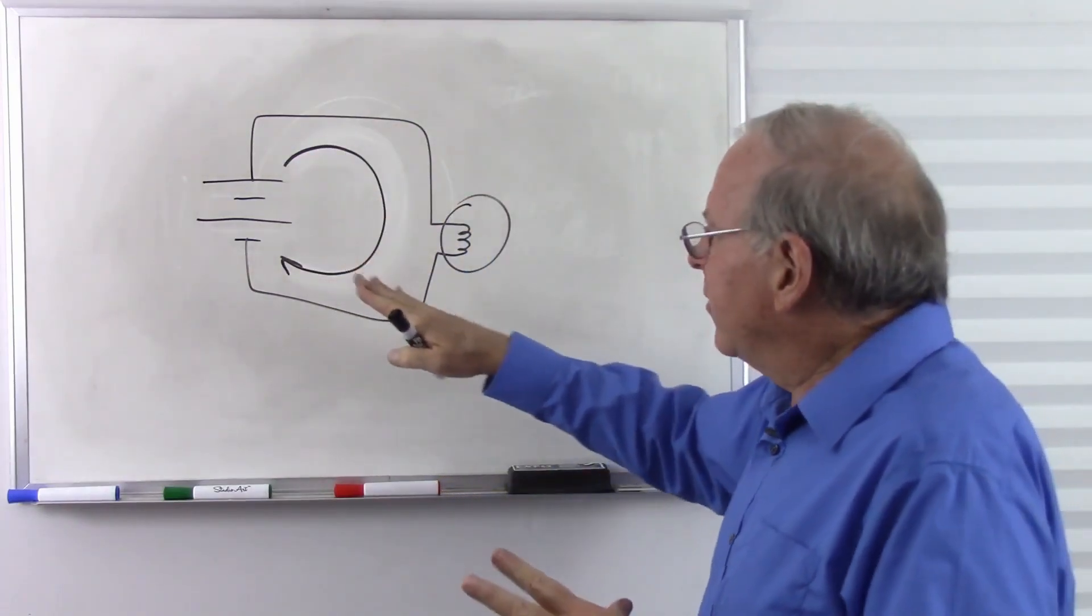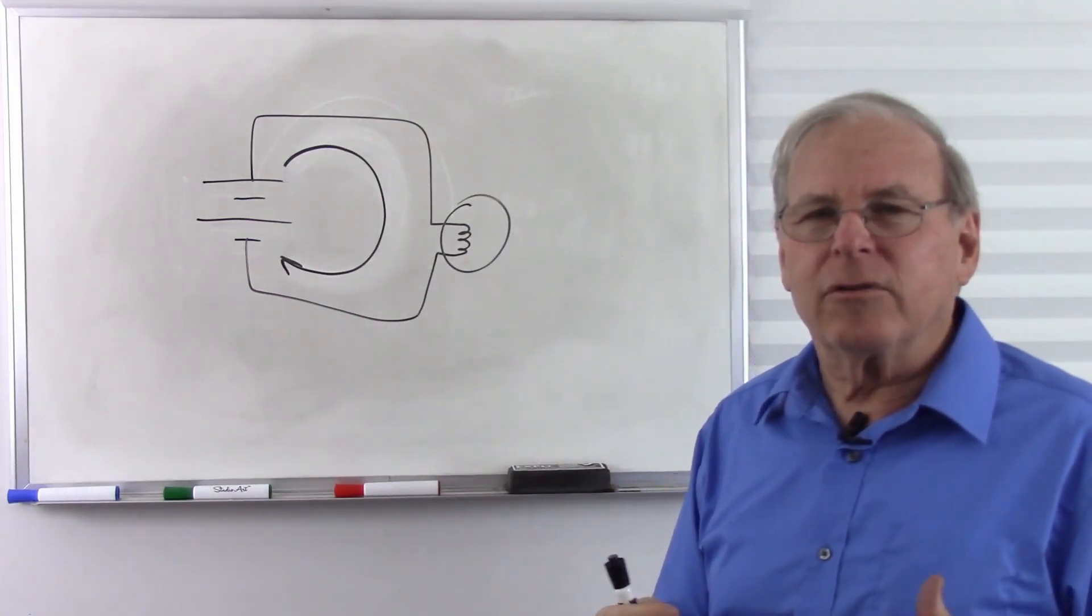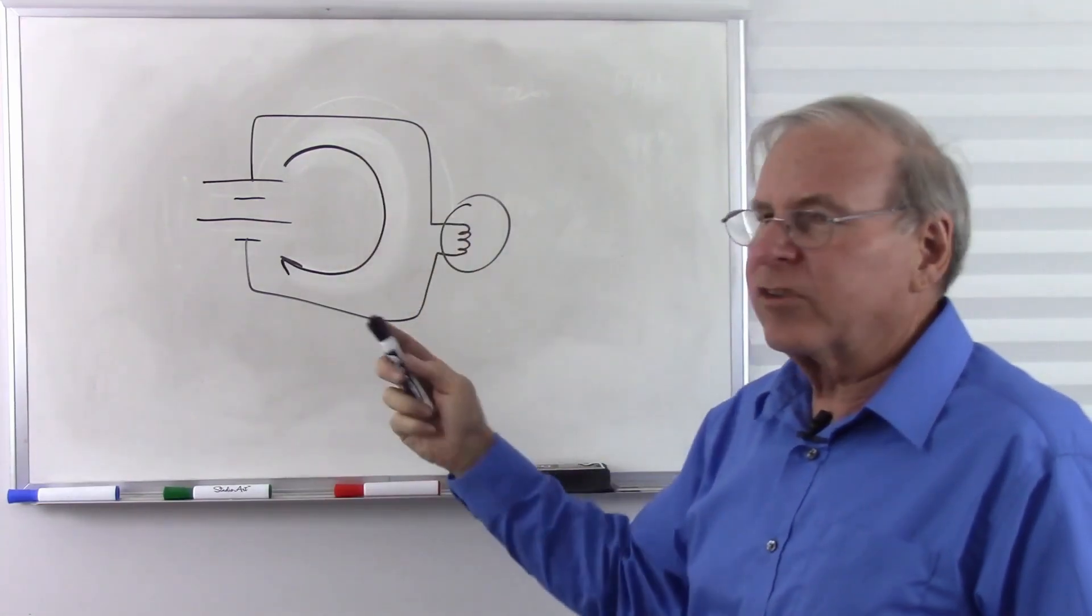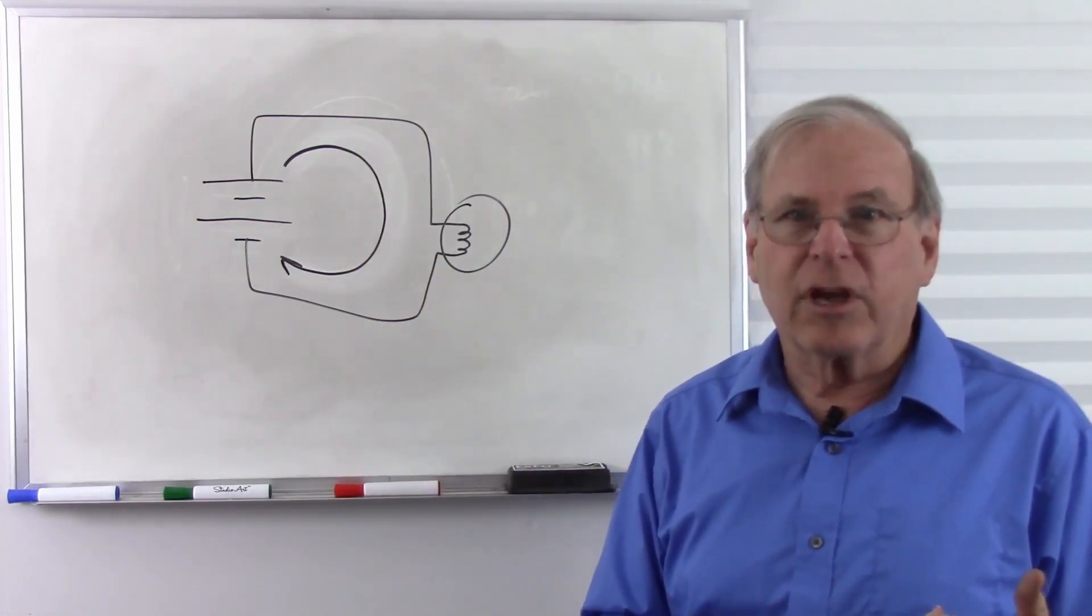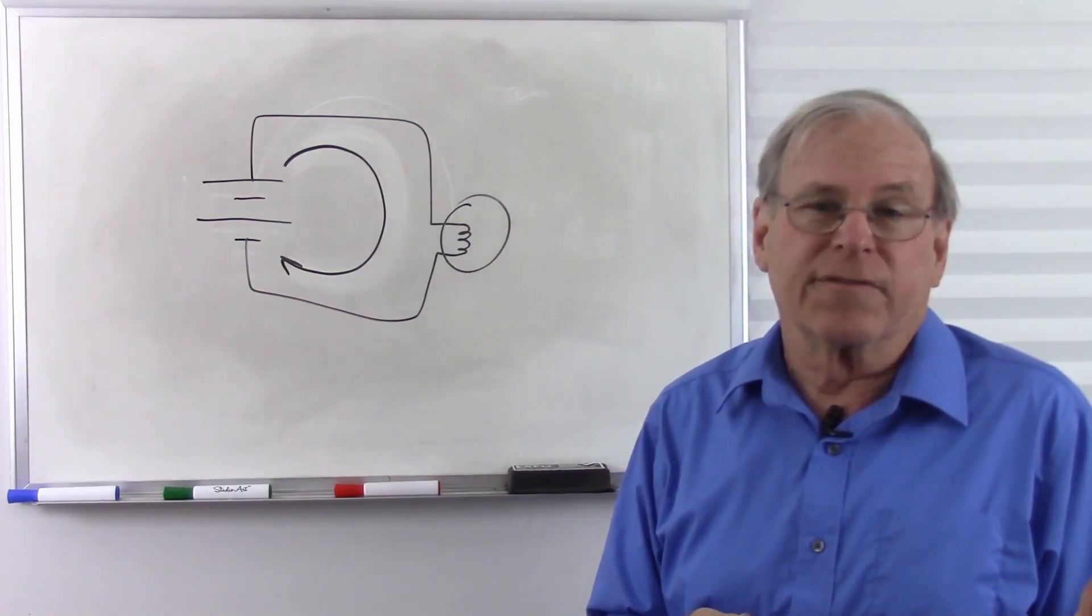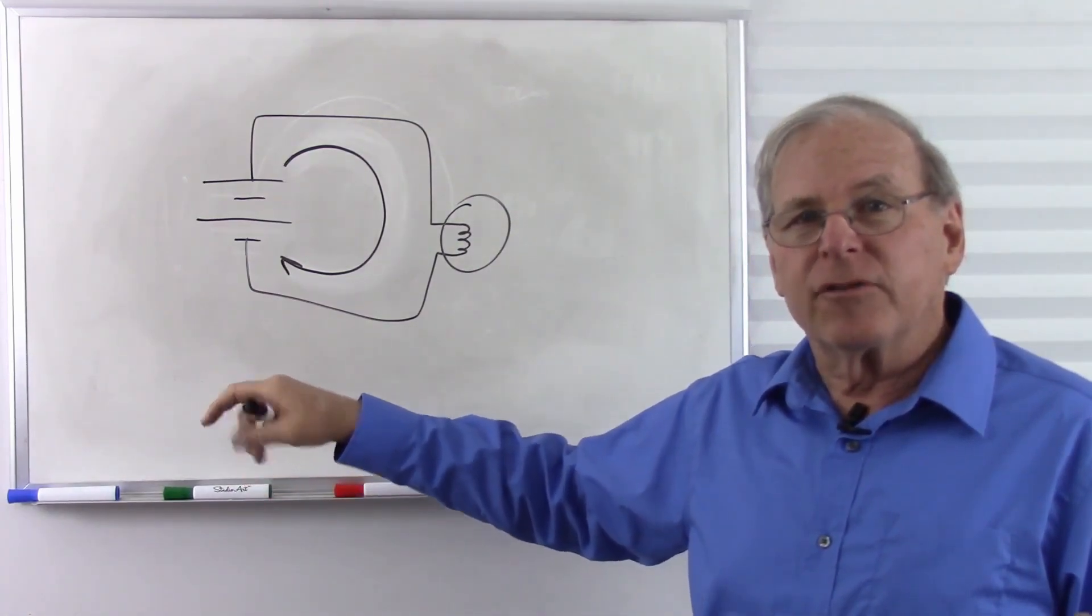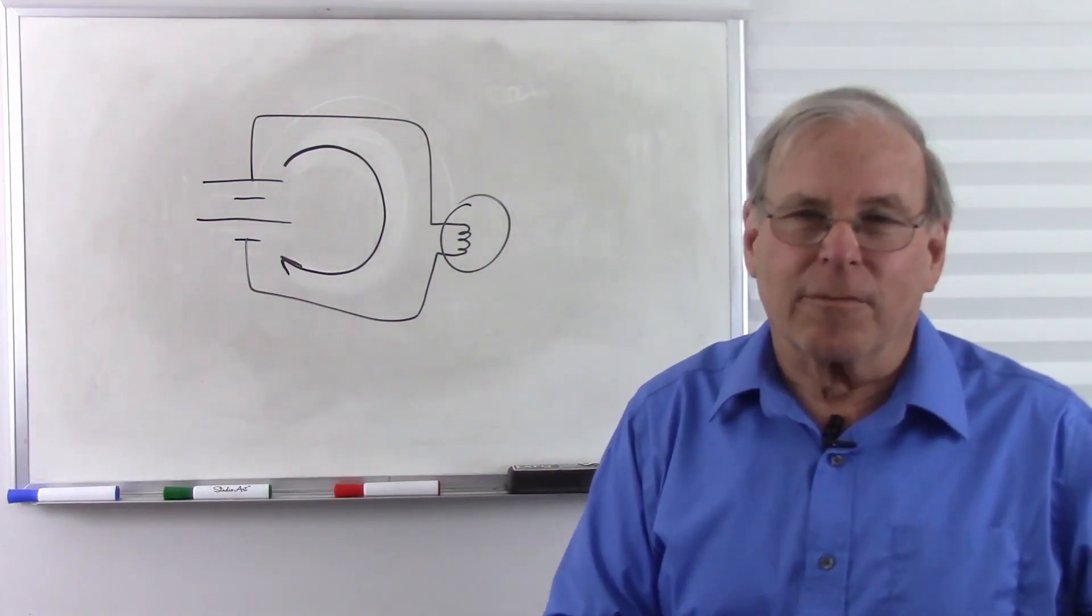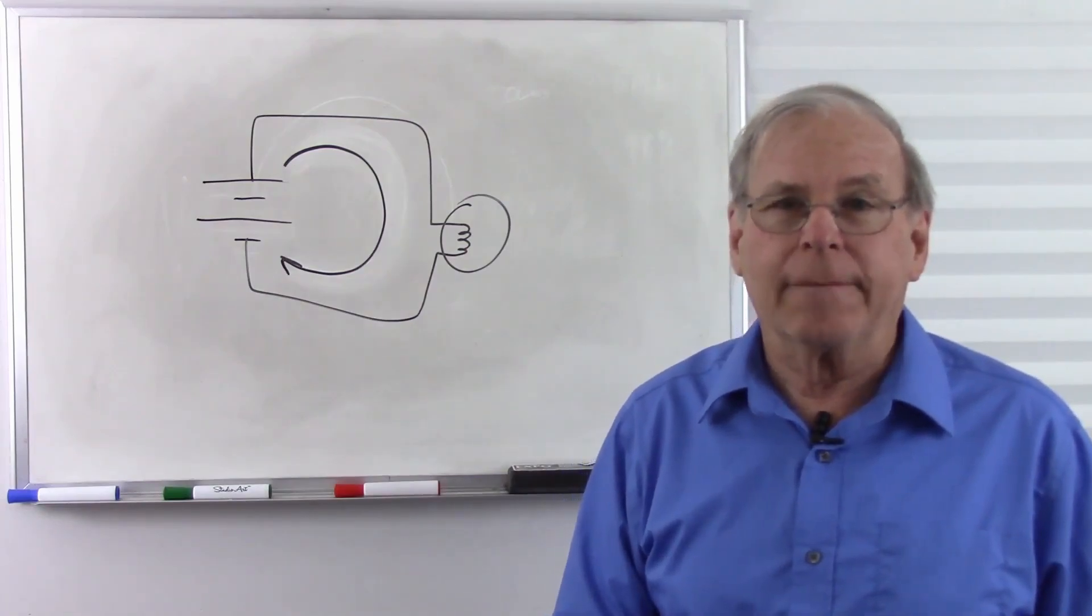But it's backwards. Doesn't it mess up the circuit to see it going that way? And the answer is no. It's because it's a closed system. Let's say we have a fire hose and we need to stop the water from flowing out of the fire hose.